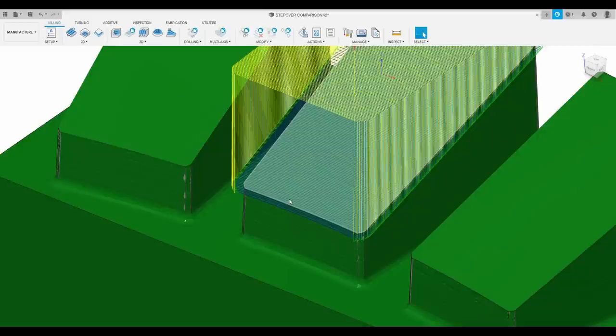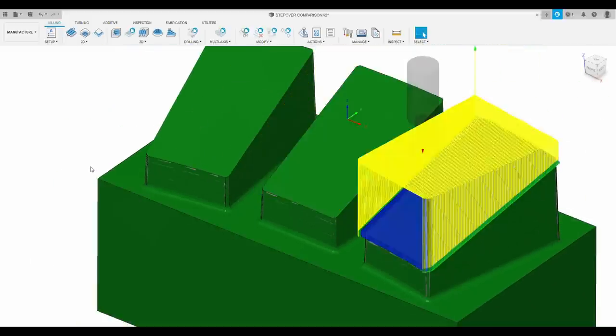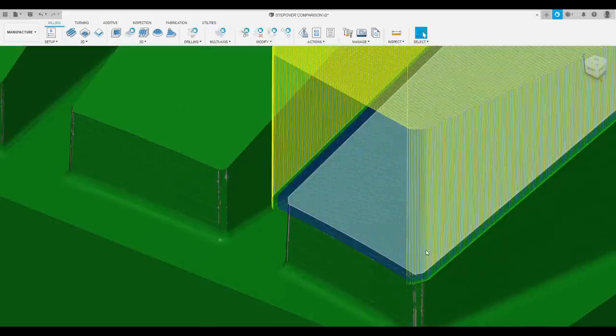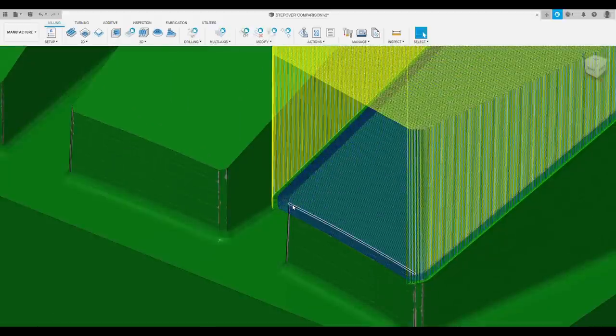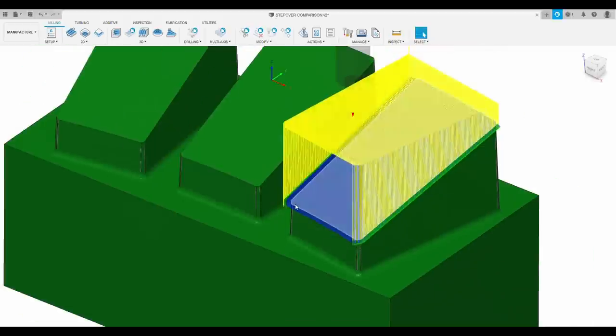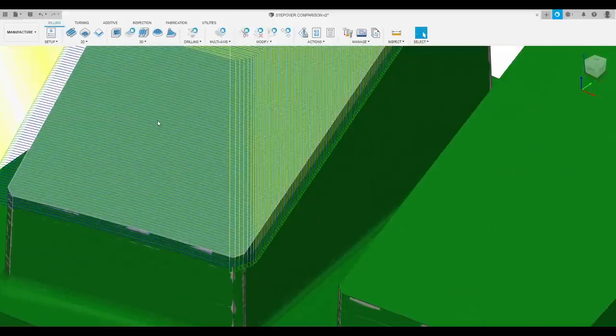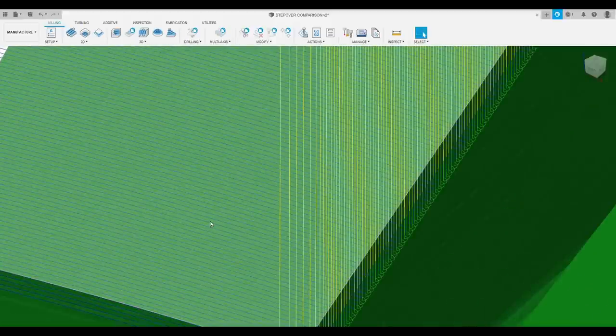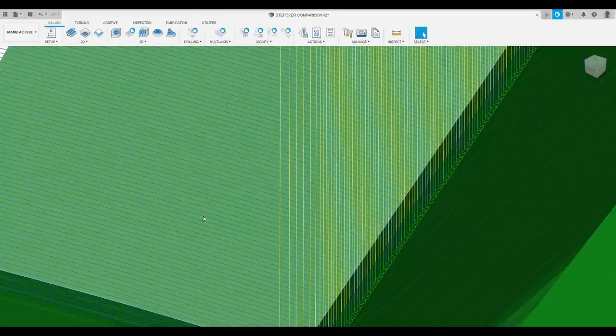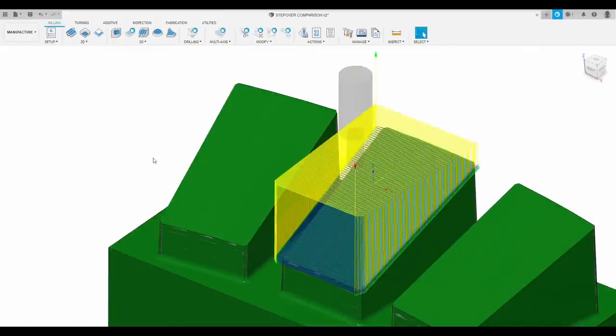On the right land, I've cut the step over in half to 1 thou and 4 tenths, but the feed per tooth is still 2 thou 8 tenths. So half the step over of the center one. On the far left, it's the same step over, 2 thou 8 tenths, but I've slowed the feed rate down to 1 thou 4 tenths. So half the feed of our ideal toolpath.